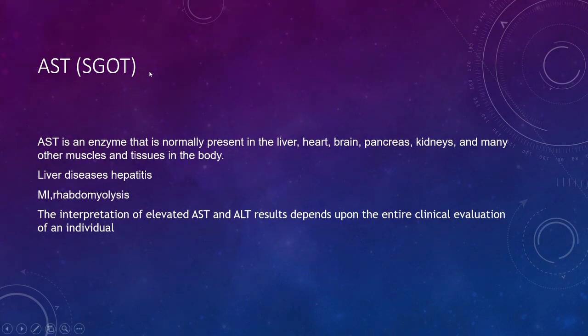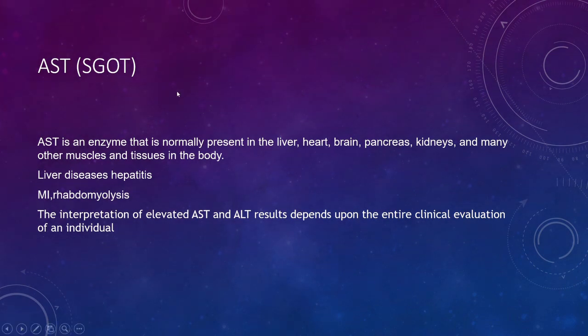AST is also called SGOT. It is an enzyme found not only in liver conditions like liver infection but also elevated in heart attacks or muscle breakdown.